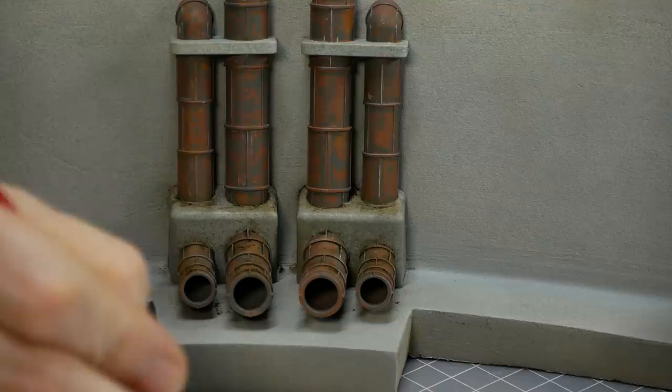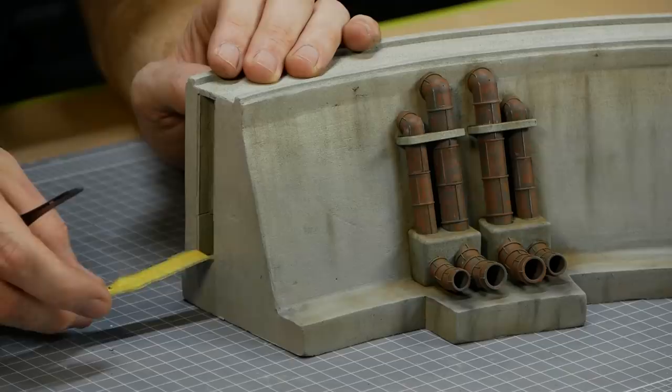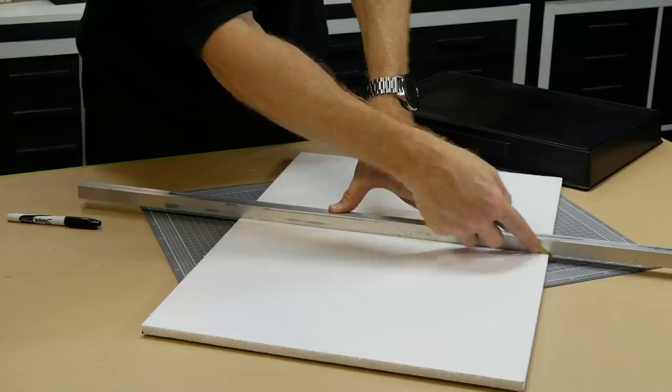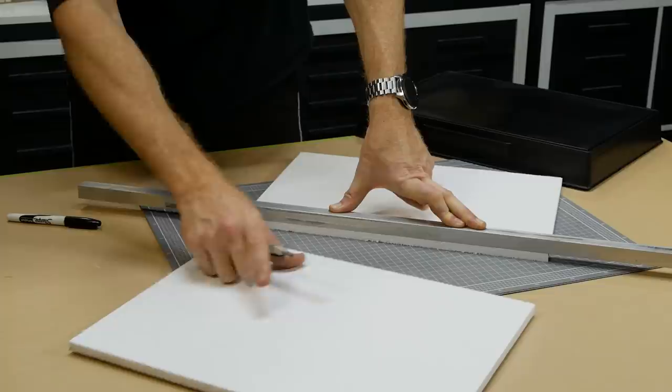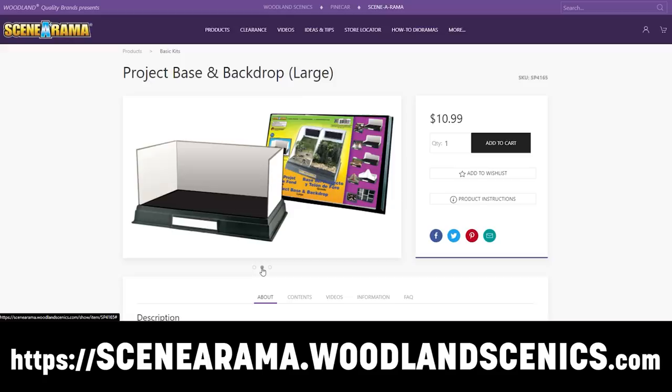To weather the wall some more weathering powder was used. Simulating dirt and grime build up as well as streaking down the face of the dam wall. Now for the real transformation, land forming.